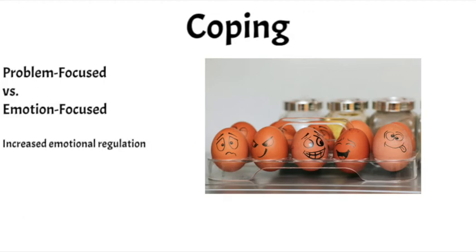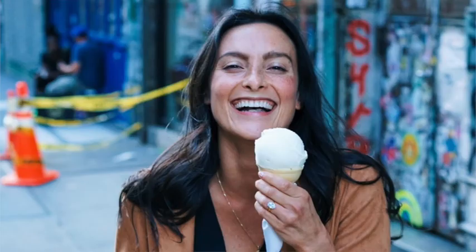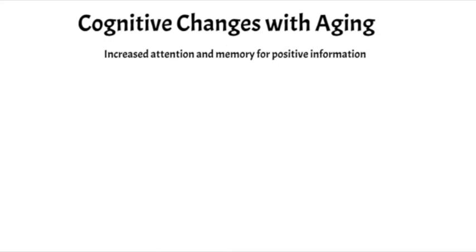Older adults are also able to regulate their emotions at a faster pace than younger adults. If a negative event happens, older adults are more quickly able to return to a normal state of processing. Additionally, older adults pay attention to and remember positive information better than neutral and negative information. Perhaps the reason is that older adults try to focus more on the positive, so they pay more attention to it and remember it better. For younger adults, negative information naturally tends to stick out and is more easily remembered.